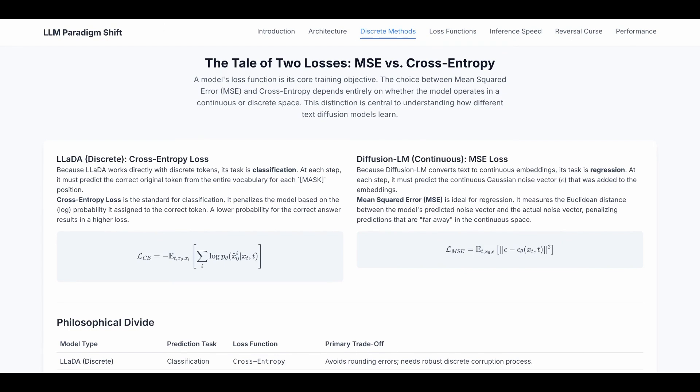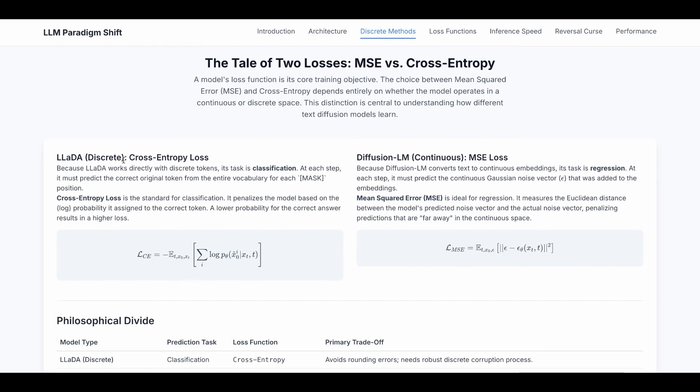For LADA, which is discrete, it uses a cross entropy loss because it works with discrete tokens. The task is classification. At each step it must predict the correct original token from the entire vocabulary for each mask position. And cross entropy loss is the standard for classification. It penalizes the model based on the log probability it assigned to the correct token.